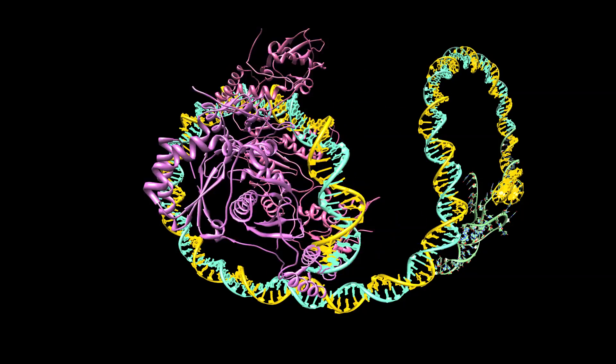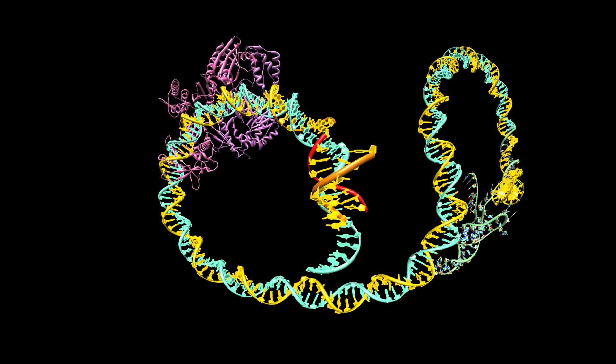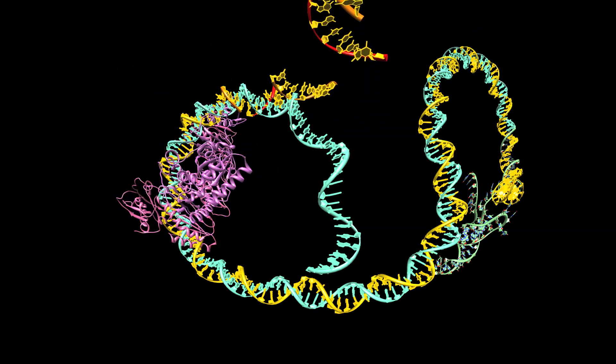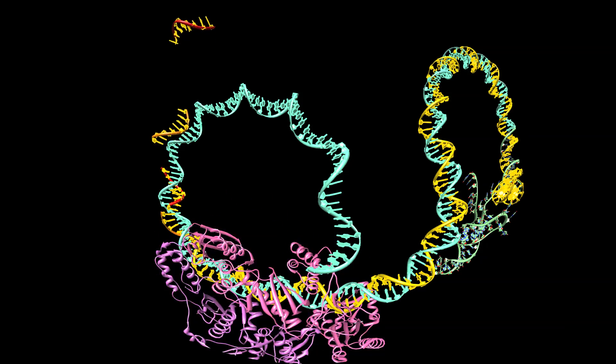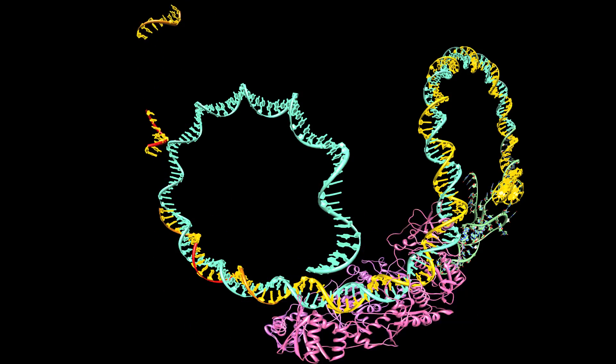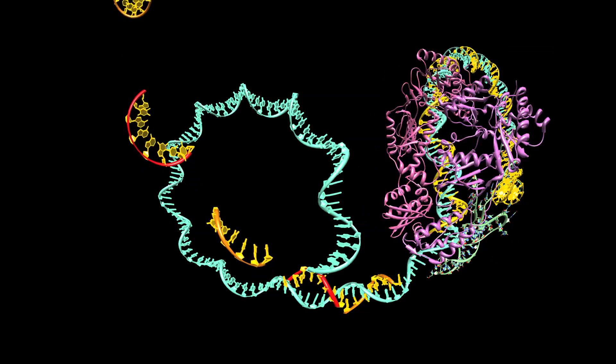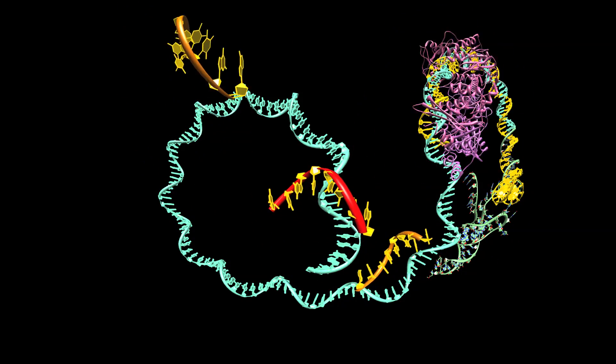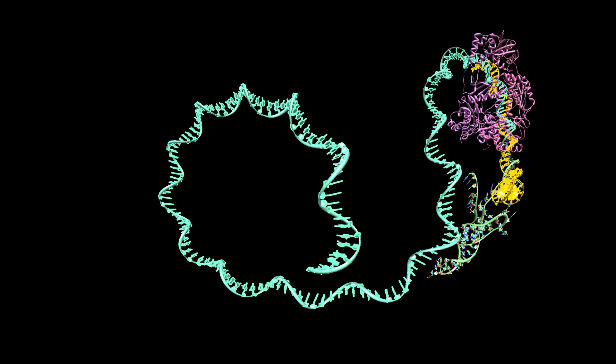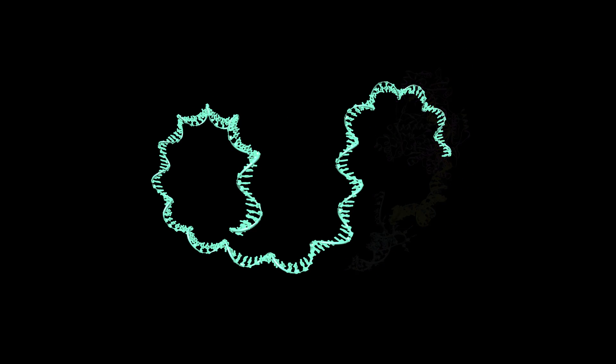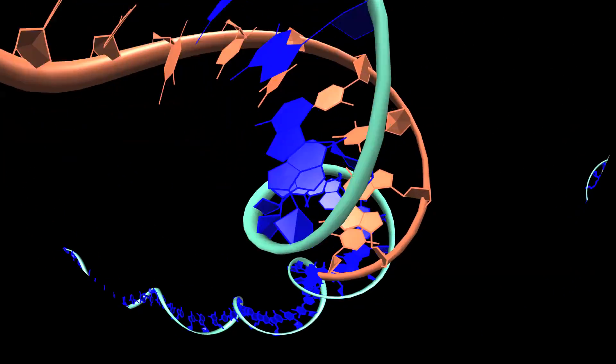The same machine cuts up and removes the template RNA. It then adds a second strand of DNA to form a double helix.